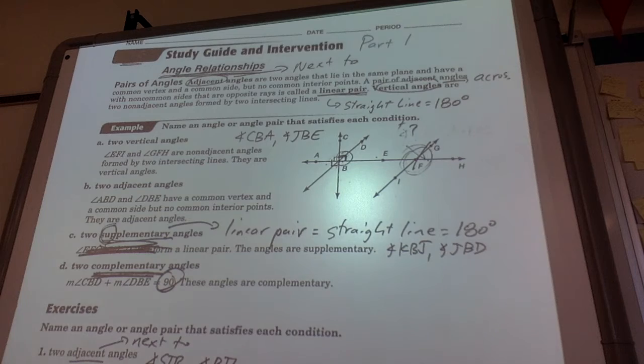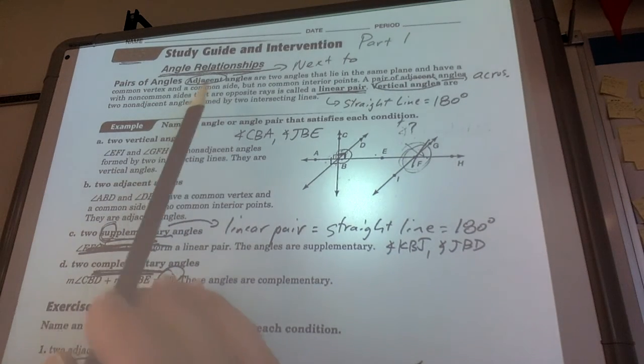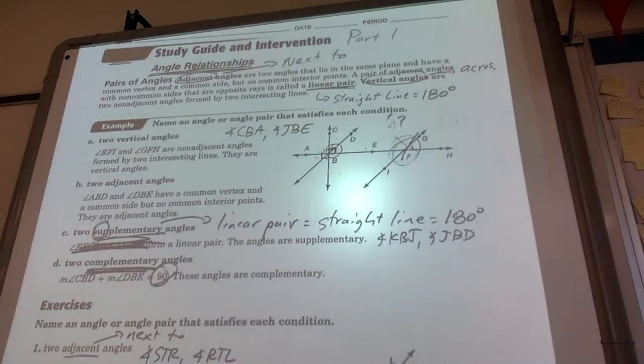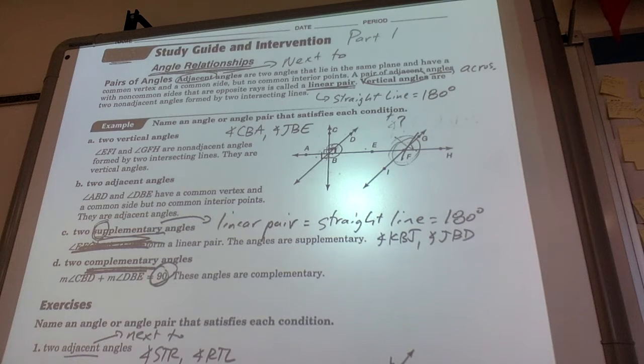So just a few quick terms to know. Pretty simple right here in this paragraph. It says adjacent angles. You need to know adjacent means next to. The technical definition is two angles that lie in the same plane and have a common vertex and a common side, but no common interior points. Adjacent angles are next to each other.